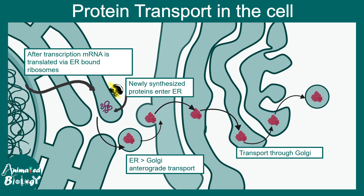So now we clearly understand there is a sequence: it initially gets into the ER, gets folded in the ER, quality control happens in the ER, it gets sorted into the Golgi, modified, and eventually secreted. This sequence of events that is very clear to us and always depicted in textbooks was not clear 50 years ago. This story is about that.